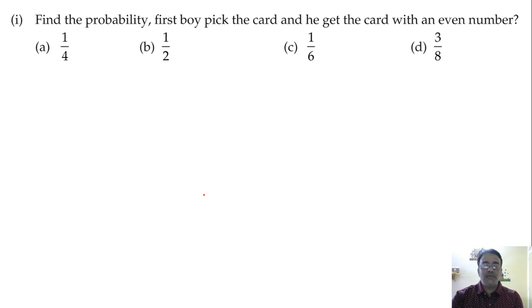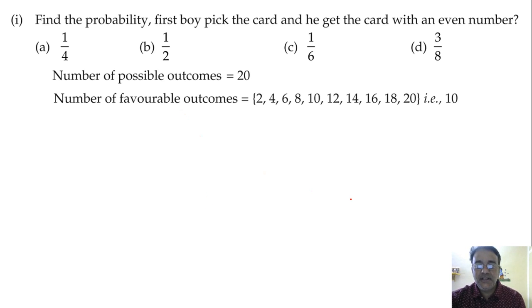So what is the probability? 10 by 20, so 10 by 20 is 1 by 2. So the correct option is option B. Option B, right.